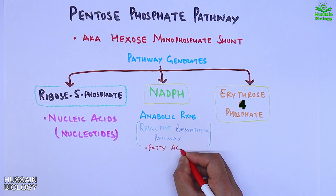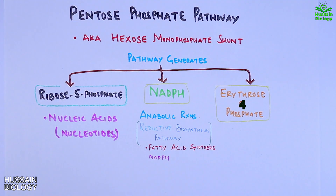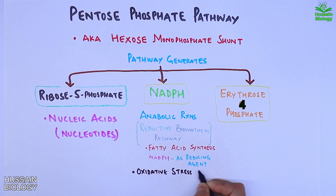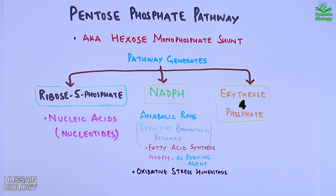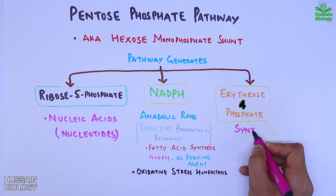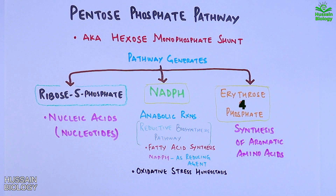For example, in fatty acid synthesis, NADPH acts as a reducing agent. NADPH also aids in oxidative stress homeostasis, such as in the generation of ROS, and is important for cytochrome P450 enzymes. The third important molecule, erythrose-4-phosphate, is used in the synthesis of aromatic amino acids.